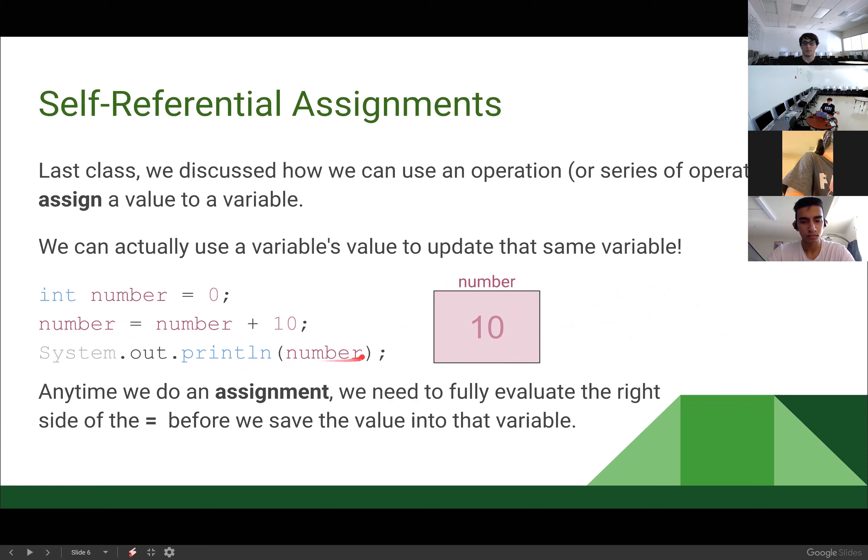So now number is going to store 10. So now when I print line my number, it's going to equal 10. Does that process make sense how I can overwrite a value when it's when a calculation that includes that number or that variable? All right.